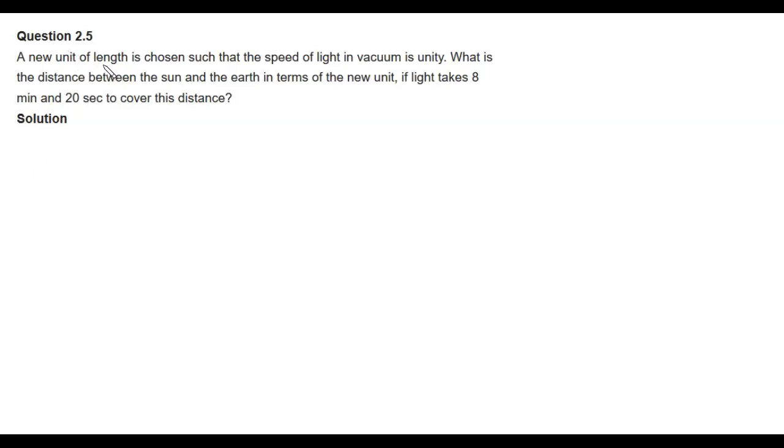A question is, a new unit of length is chosen such that the speed of light in vacuum is unity. What is the distance between the sun and the earth in terms of the new unit if light takes 8 minutes and 20 seconds to cover this distance?